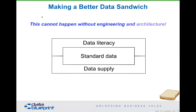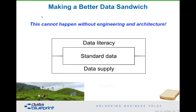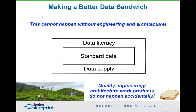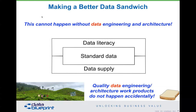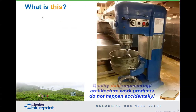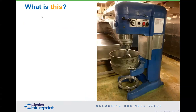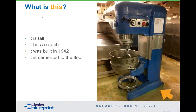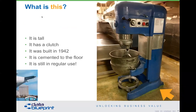This type of integration cannot happen without architecture and engineering. Quality engineering products don't happen accidentally. I found that particular Deming quote on a tea farm in India, and of course we added the word data to it. The key for this — one of my favorite objects in the world — is on a ship out in San Diego Harbor. It's taller than I am, has a clutch, was built in 1942, is cemented to the floor, and is still in regular use today.